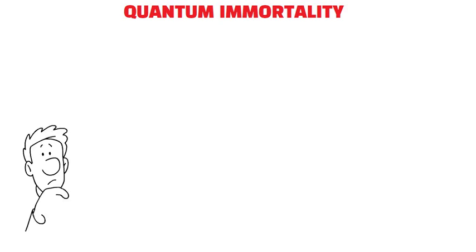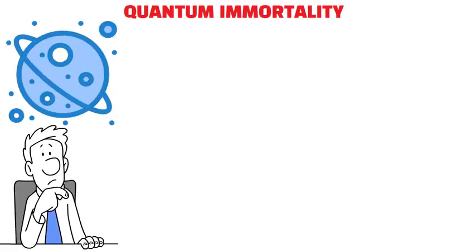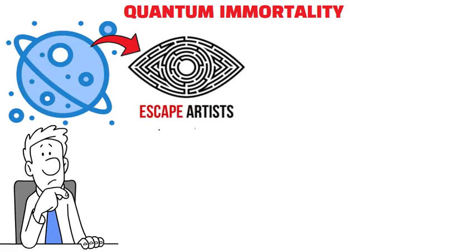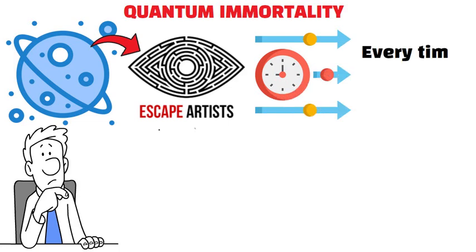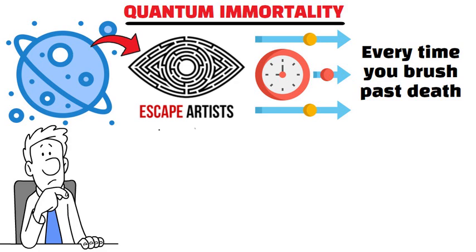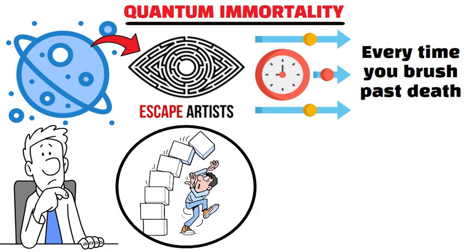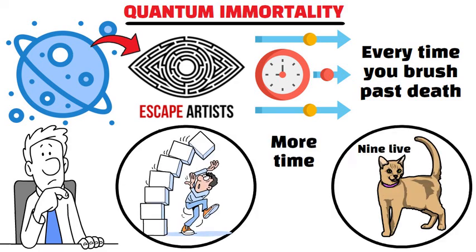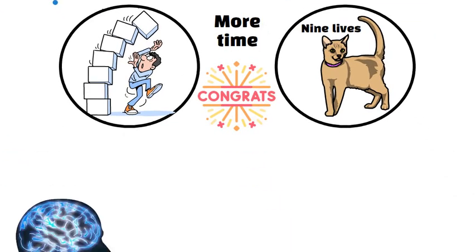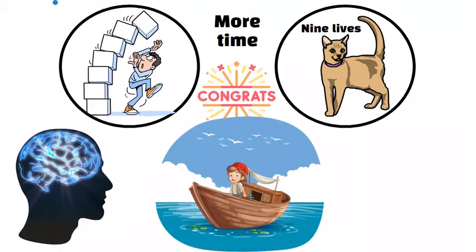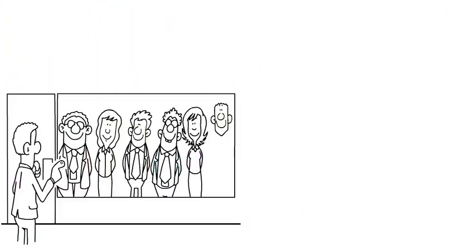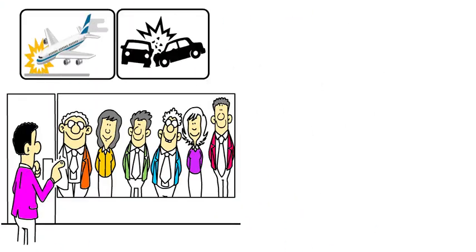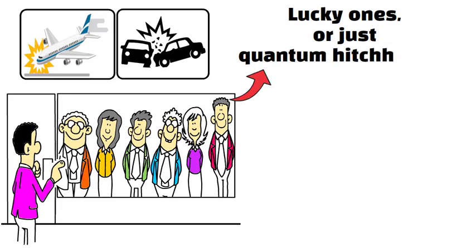Quantum immortality. Imagine this. A universe where your consciousness is like a cosmic escape artist, slipping into parallel timelines every time you brush past death. Welcome to the mind-bending world of quantum immortality. According to this theory, if you've dodged death more times than a cat with nine lives, congratulations. Your consciousness might just be hopping across realities where you always survive. Think about those folks who've survived plane crashes and freak accidents. Are they the lucky ones or just quantum hitchhikers?